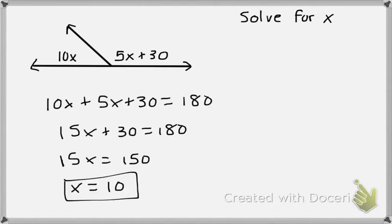So here we have it. We have small part plus small part equals big part. You just need to know that a straight line equals 180 degrees. And if you solve, you get X equals 10.